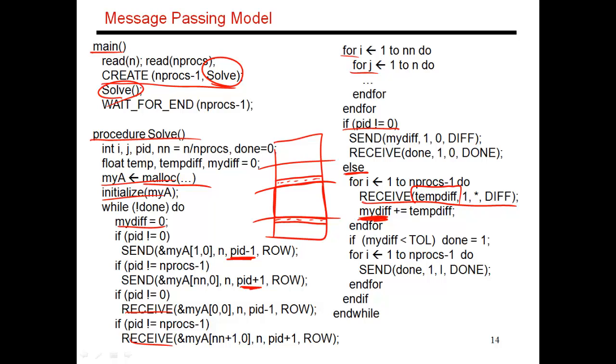So this is what PID 0 does. All the other PIDs are essentially sending their mydiffs to PID 0. And after that, they'll wait until they receive the global diff value from PID 0.